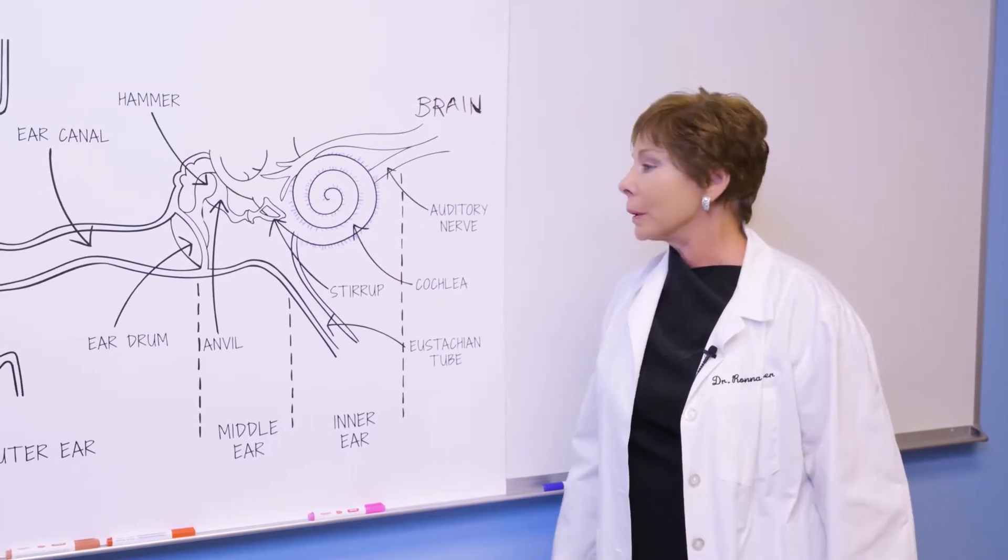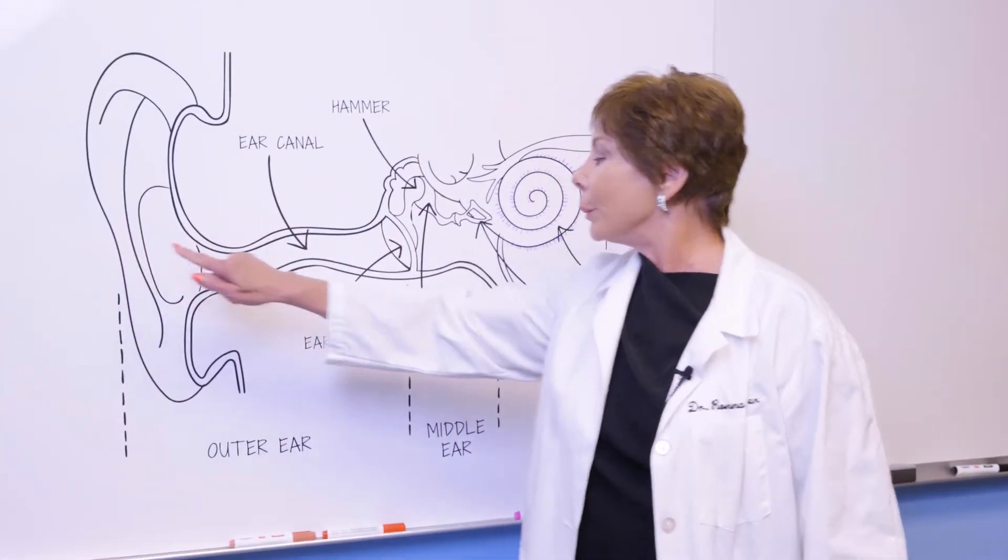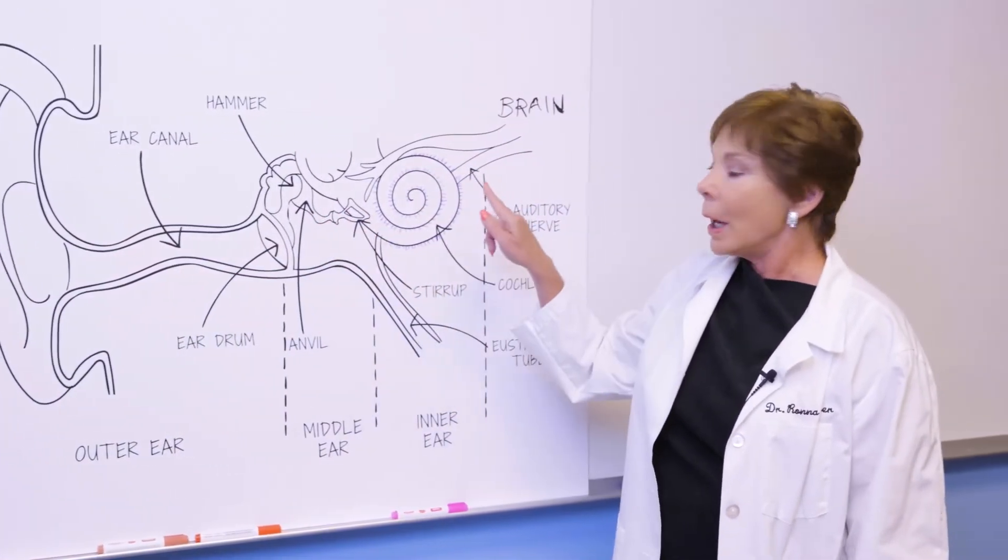There are three parts to your hearing. Your outer ear, your middle ear, and your inner ear.